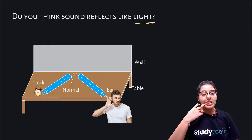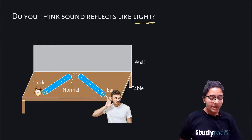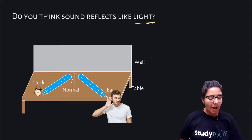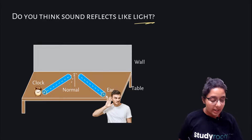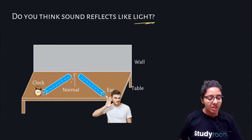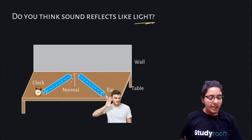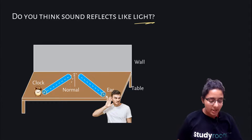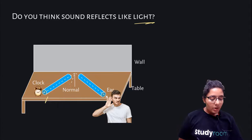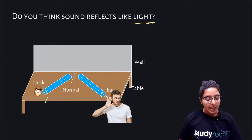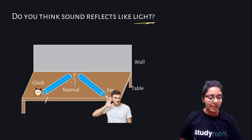Let's do this activity. Take two identical pipes as shown in the figure — you can make the pipes using chart paper. The length of the pipes should be sufficiently long. Arrange them on a table near a wall. Keep a clock near the open end of one of the pipes and try to hear the sound of the clock through the other pipe.